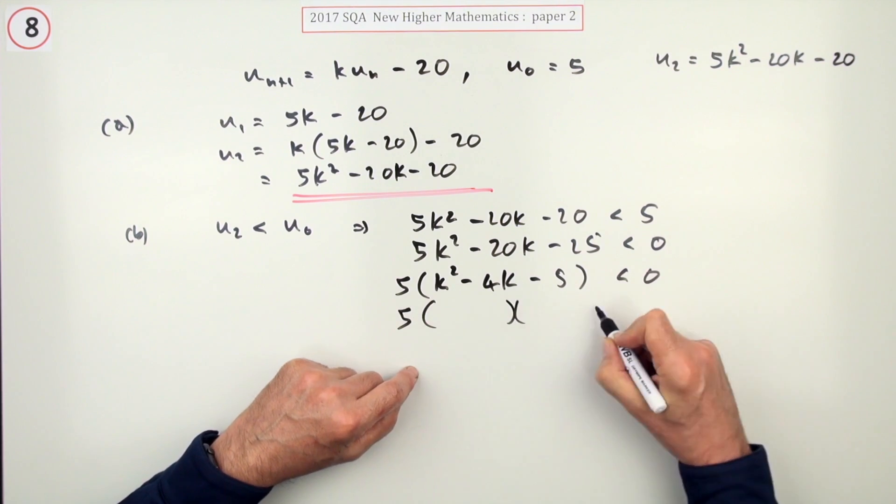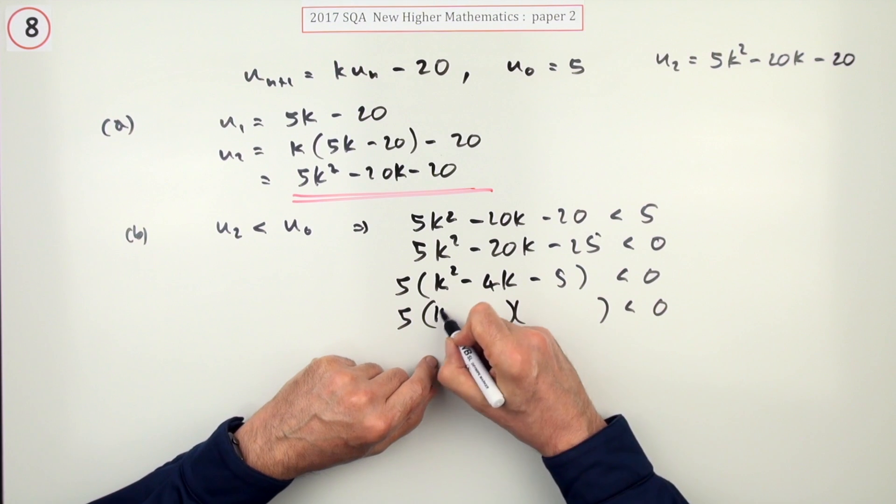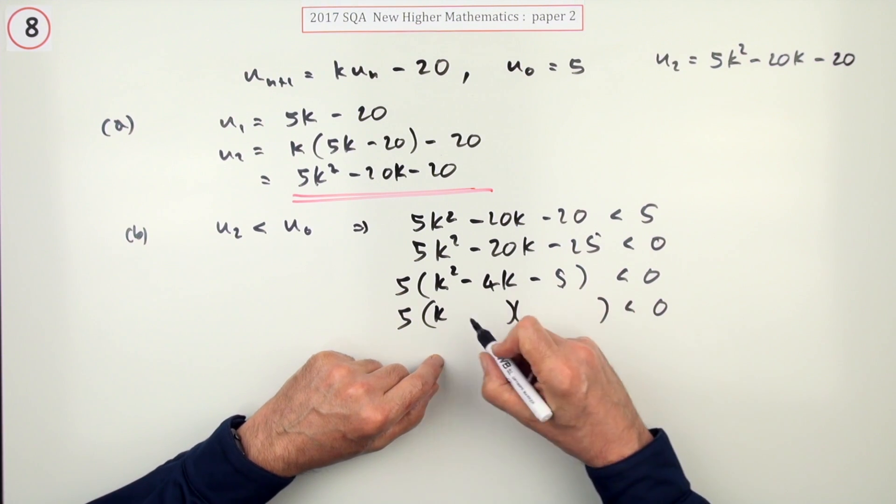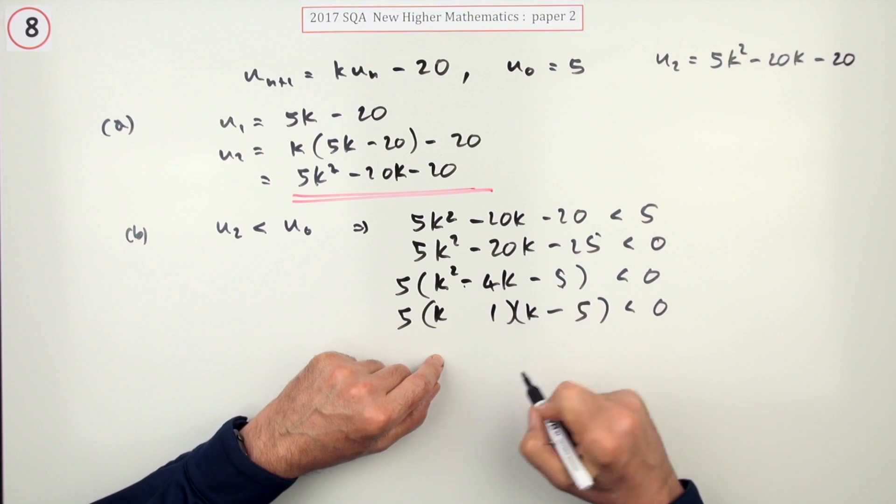Now factorize it. Hopefully it won't be nasty if you had to use the quadratic formula, but you don't. You can see that multiply to get 5 and the difference of 4 is 1 and 5. The negative goes to the larger.